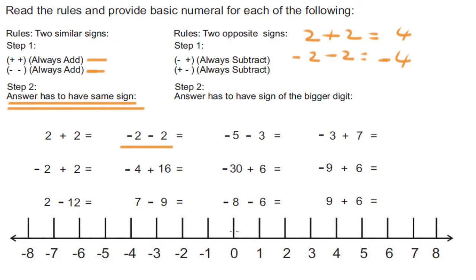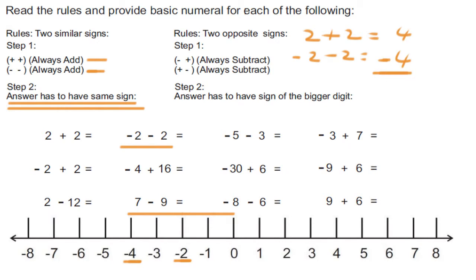Let's see what it means using the number line. Zero is right in the middle, with the negative direction on one side and the positive direction on the other. We go two steps in the negative direction — one and two — and we're standing at negative two. Then we go further two steps in the negative direction — one and two — and we are at negative four.